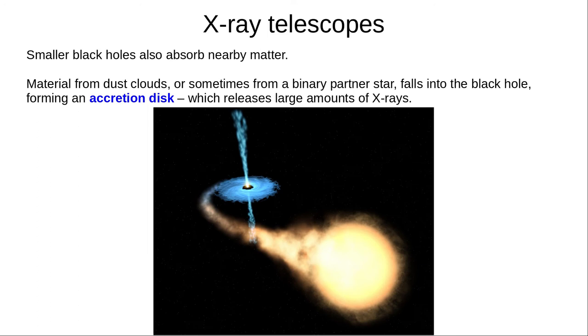X-rays are very high-energy, short-wavelength radiation. Smaller black holes absorb nearby matter, just like the supermassive black holes we just discussed, only on a smaller scale. Matter from nearby dust clouds, or from a binary partner star, falls into the black hole, forming an accretion disk. The disk gets very hot and releases X-rays, which we can study using space-based X-ray telescopes. This artist's impression shows a black hole absorbing matter from its binary partner.